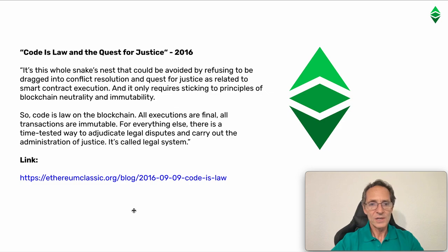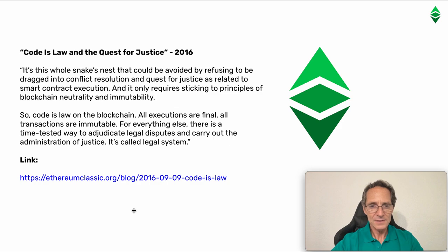The other document is 'Code is Law: The Quest for Justice,' also from 2016. It states: 'It's this whole snake's nest that could be avoided by refusing to be dragged into conflict resolution and quest for justice as related to smart contract execution, and it only requires sticking to principles of blockchain neutrality and immutability. So code is law on the blockchain. All executions are final. All transactions are immutable. For everyone else, there is a time-tested way to adjudicate legal disputes and carry out administration of justice — it's called the legal system.'